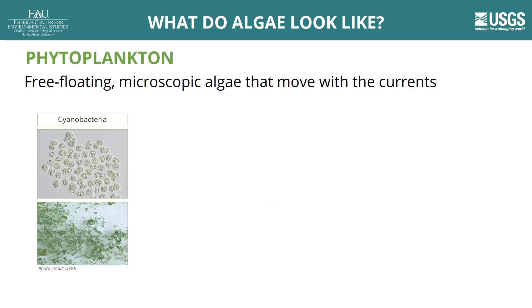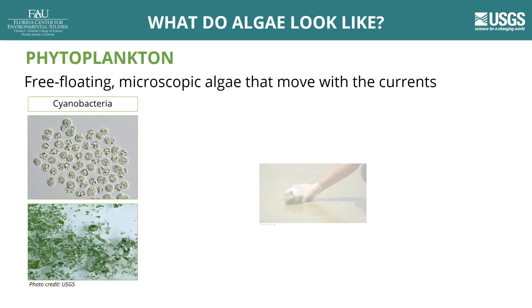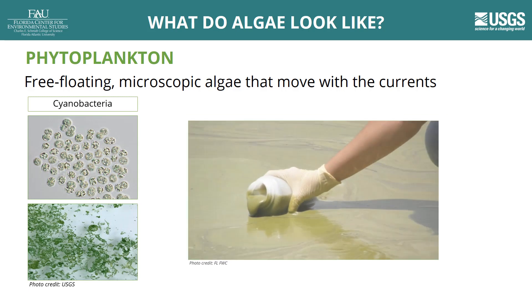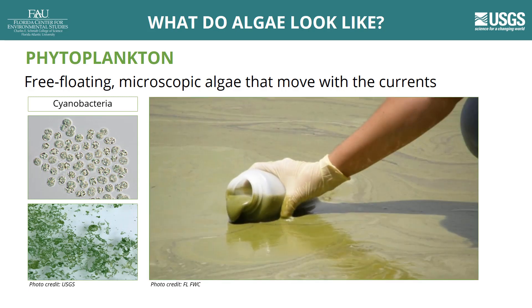Microscopic algae that live dispersed in the water are called phytoplankton. Phytoplankton are usually buoyant, free-floating, and move with currents. Some phytoplankton are also individually motile.